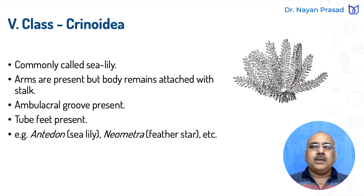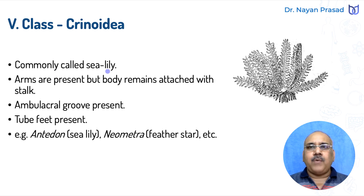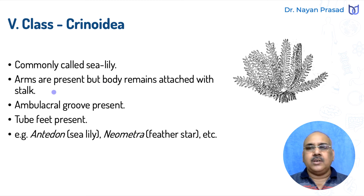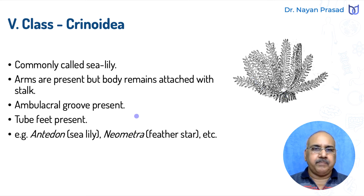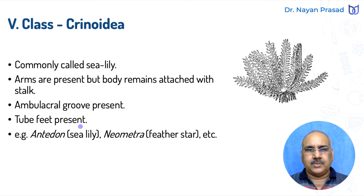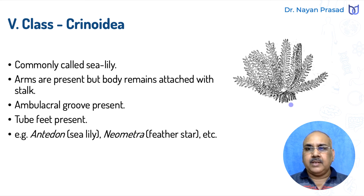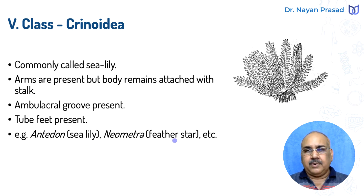Class Crinoidea: members are commonly called sea lily. They have a flower-like, colorful body. Arms are present, but the body remains attached with a stalk, so members of this group are sedentary and show no locomotion — they remain attached at a fixed place. Ambulacral groove is present, and tube feet are also present, performing various functions. Common examples are Antedon, commonly called sea lily, and Neometra, commonly called feather star.